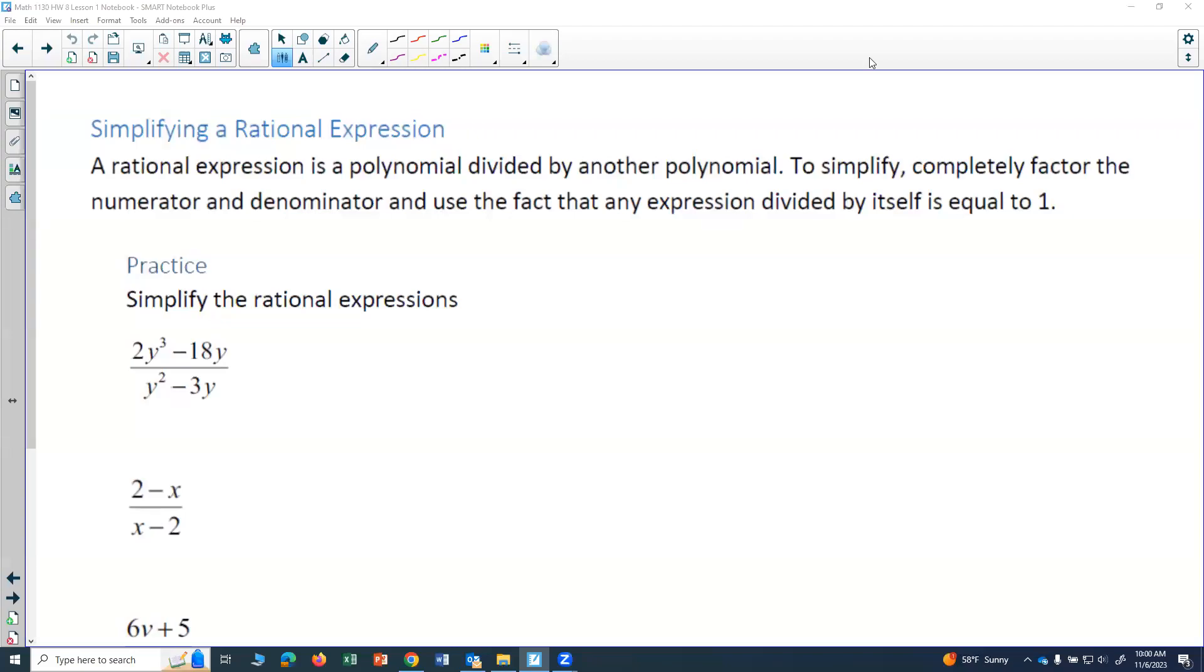In this video, we look at simplifying a rational expression. A rational expression is a polynomial divided by another polynomial. To simplify, completely factor the numerator and denominator and use the fact that any expression divided by itself is equal to 1.